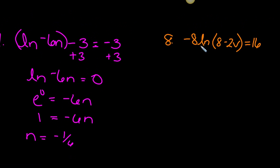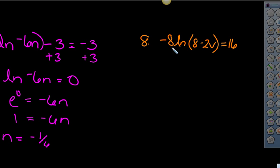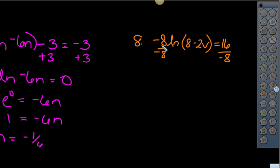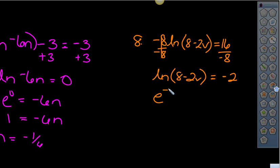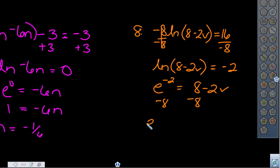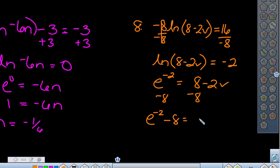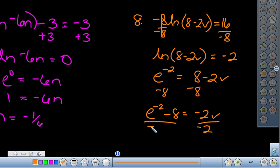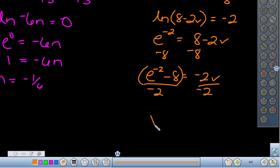The last problem: isolate the logarithmic part by dividing by negative 8 to remove it from the left-hand side. Since the argument is wrapped in parentheses, it counts as one number and is now isolated. Convert: the base is e, the exponent is negative 2, and that equals 8 minus 2V. Subtract 8 to get e to the negative 2 minus 8 equals negative 2V, then divide by negative 2. Wrap the numerator in parentheses in your calculator. You get V approximately equal to 3.9323.